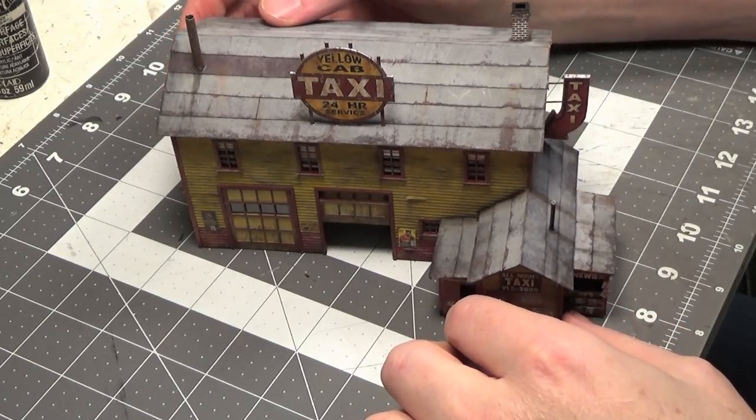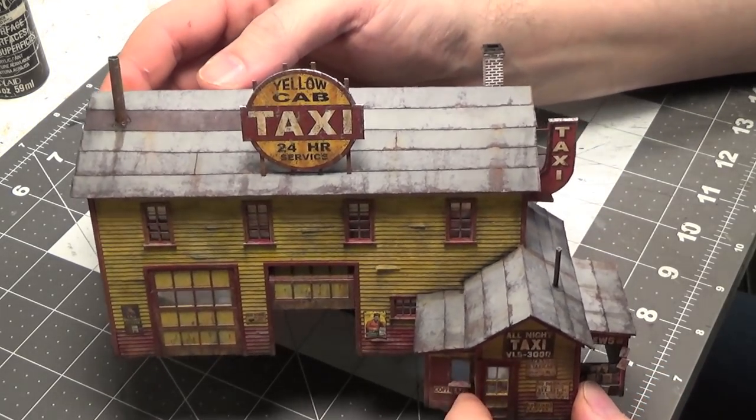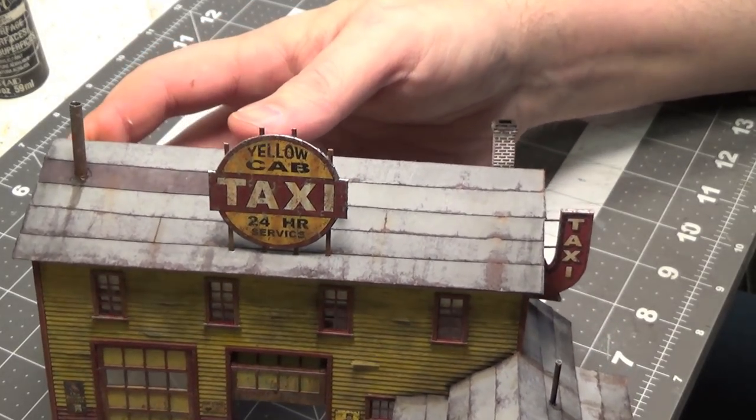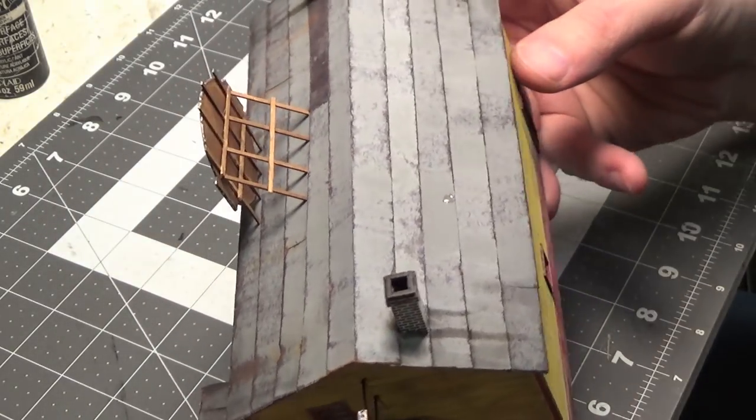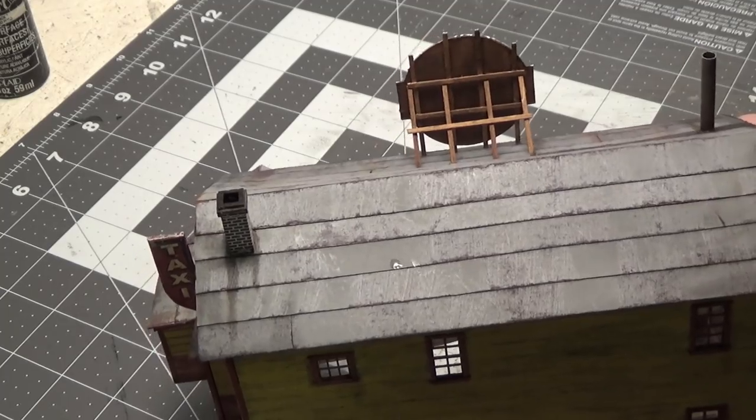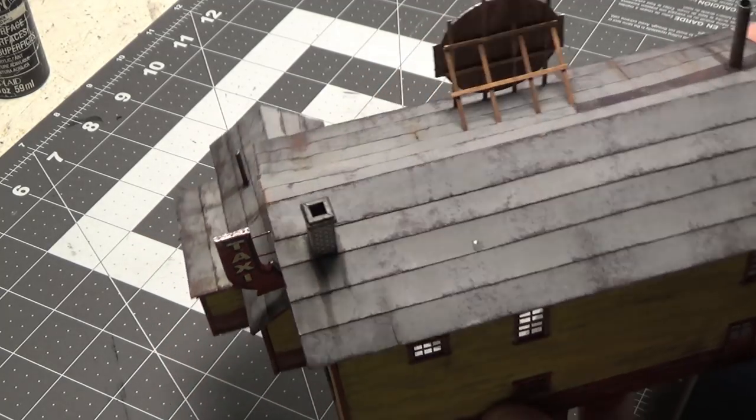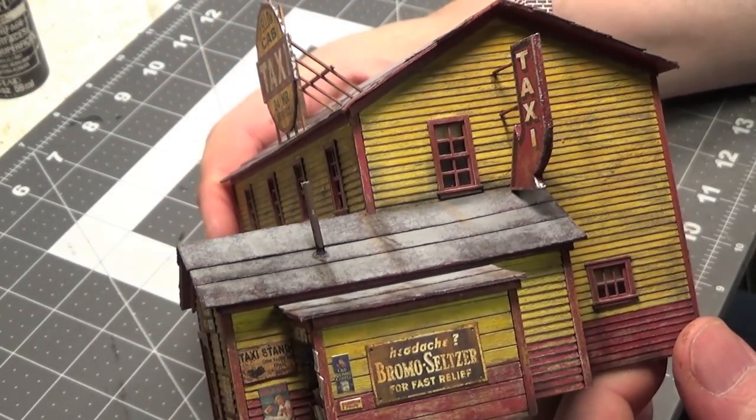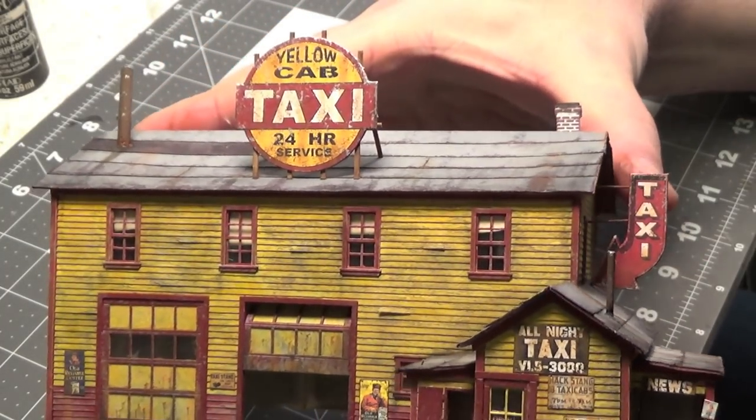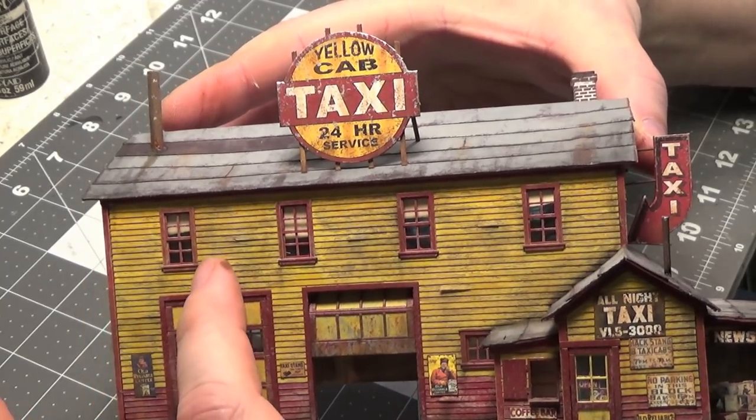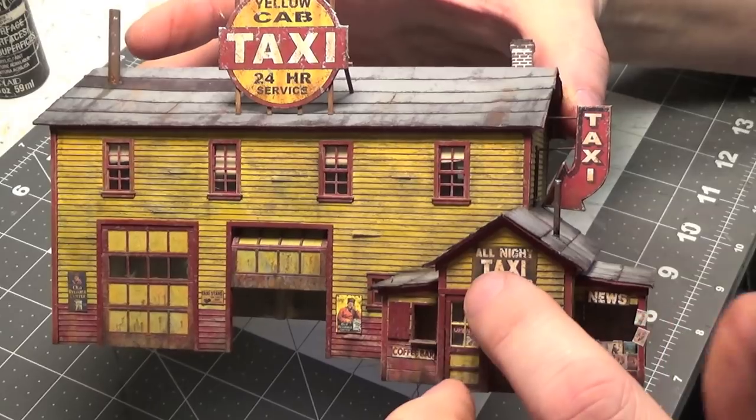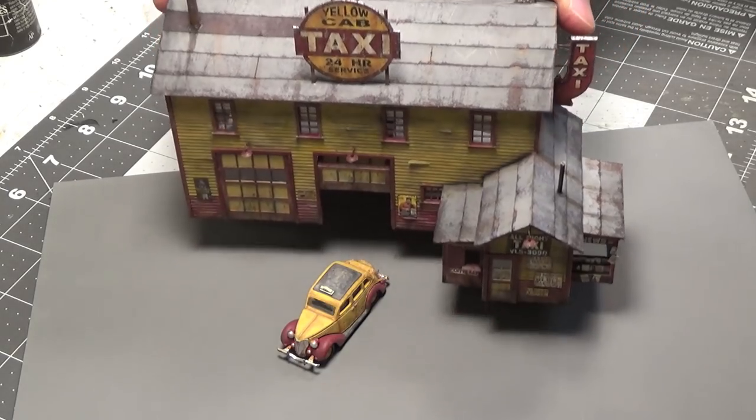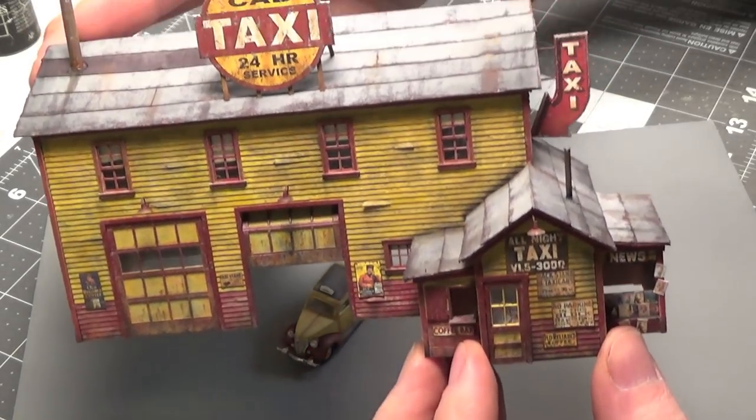Well we are very close to almost being done with this project. I wanted to show you the signs that are in place. For the sign on the very top I just took a strip wood and braced it on the back. The only thing left to do is to paint and install lamps above the two doors here and a small lamp above the front door.